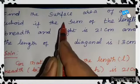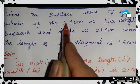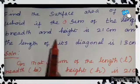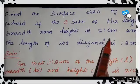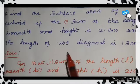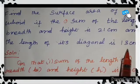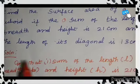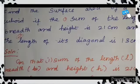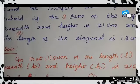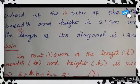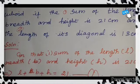So, the first condition given is the sum of the length, breadth and height is 21 cm. And the second condition is the length of the diagonal is 13 cm. Using these two conditions, we have to find the surface area of a cuboid.